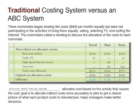The goal of activity based costing is to allocate those indirect costs more accurately to our jobs so that we can get a clearer picture of what each product costs to manufacture. This allows our managers to make better decisions for our company.